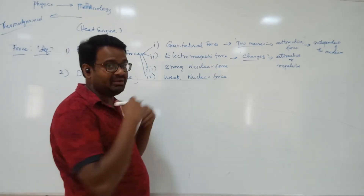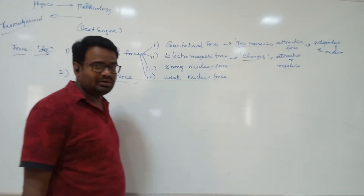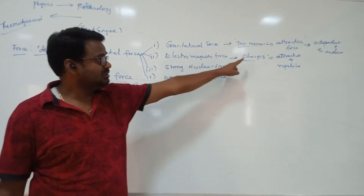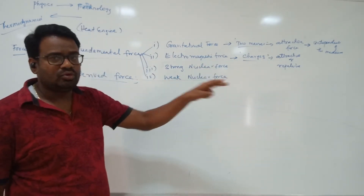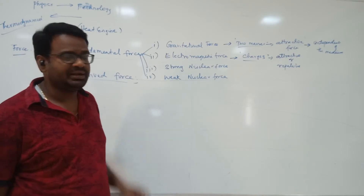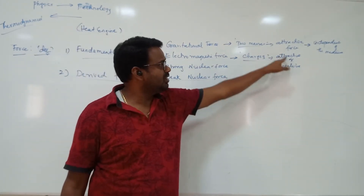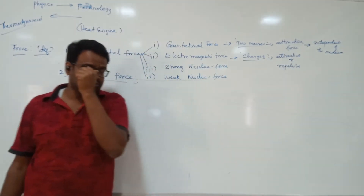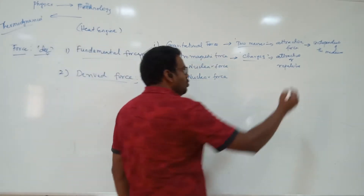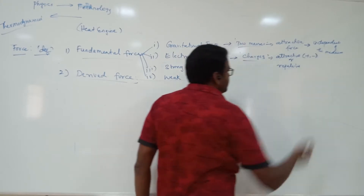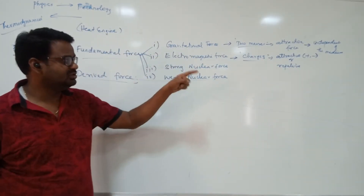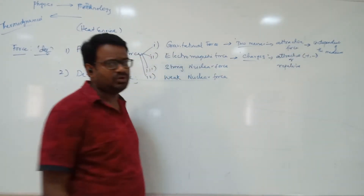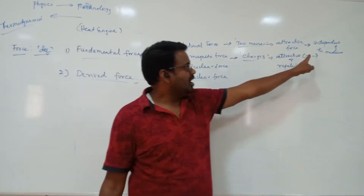Let me try to go with a lower pace. Electromagnetic force involves charged particles. Two important types of charges: positive charge and negative charge. Since two types are there, we are going to see two types of forces — attractive or repulsive. When can we have an attractive force? It is the force between a positive charge and a negative charge.